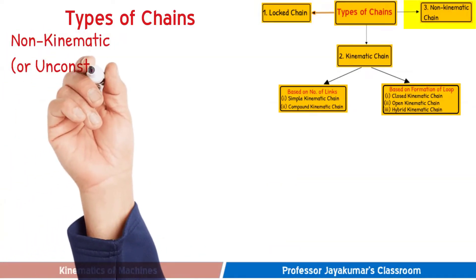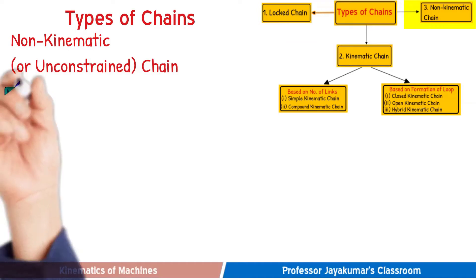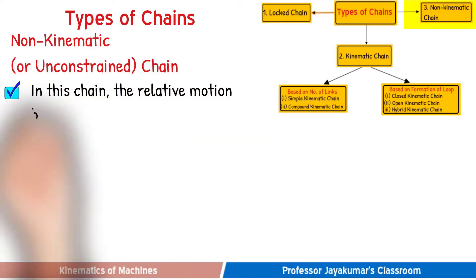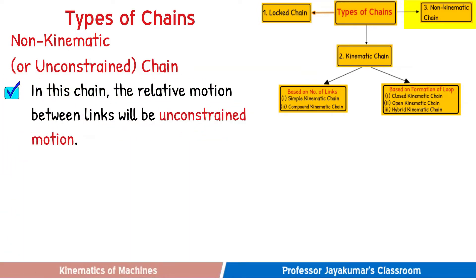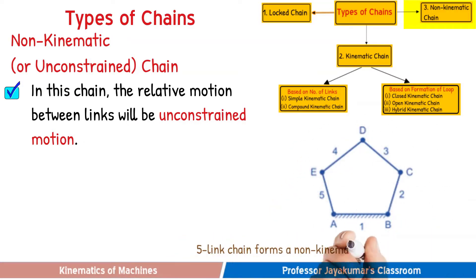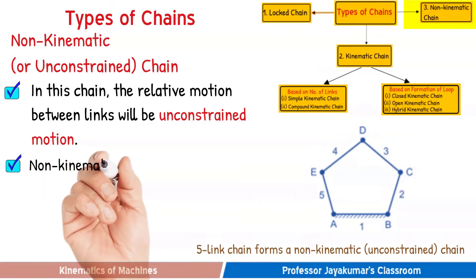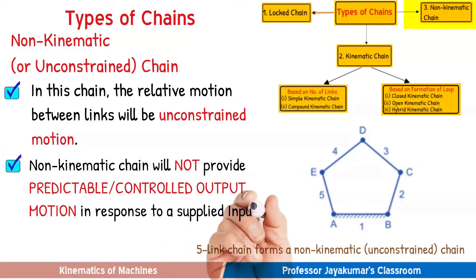The second type is a non-kinematic chain, also known as an unconstrained chain. In this chain, the relative motion between the links will be unconstrained motion. This five-link chain forms an unconstrained chain. This chain will not provide predictable output motion in response to the input motion. Hence, this unconstrained chain cannot be used for the purpose of building a mechanism.